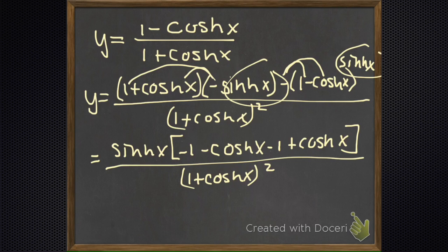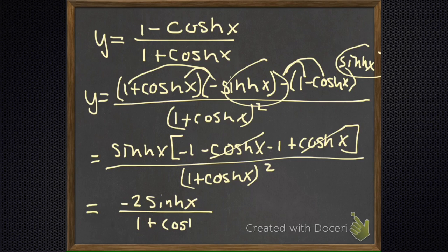Oh, these guys go away, go away. And then that minus one and minus one become a minus two. So that's minus two sinh x over one plus the cosine hyperbolic x squared. And yeah, box and flower.